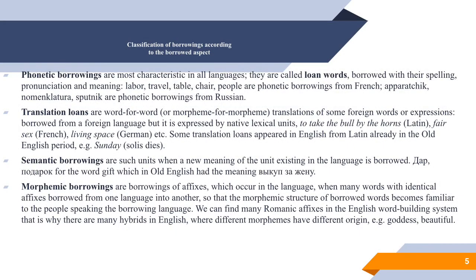In the classification of borrowings, we should give importance to the classification according to the borrowed aspect. In English, we subdivide them into four types: phonetic borrowings, translation loans, semantic borrowings, and morphemic borrowings. Phonetic borrowings are most characteristic in all languages — they are called loanwords. They are words which are borrowed with their spelling, pronunciation, and meaning, and then they undergo assimilation.